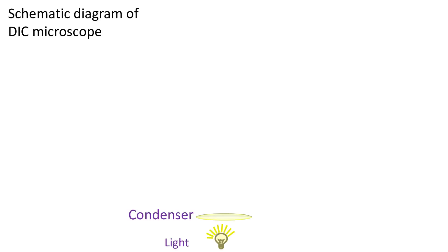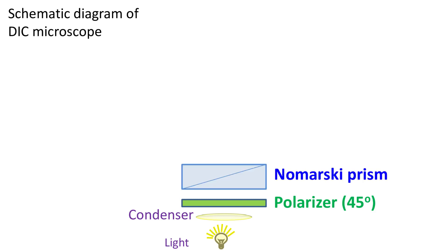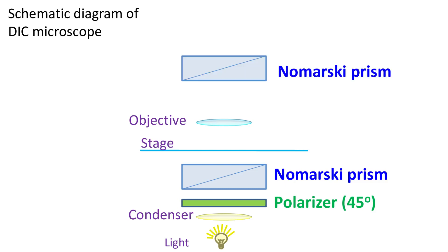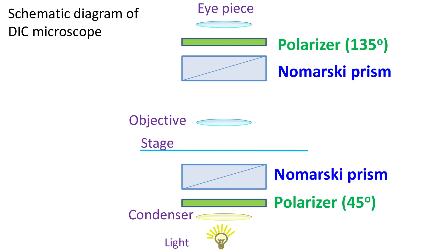Now let's see the schematic diagram of the DIC microscope. At the bottom we have the condenser, just like in a bright field microscope. Next we have the polarizer, placed at an angle of 45 degrees. On top of the polarizer we have the Nomarski prism, followed by the objective lens. On the top we have the second Nomarski prism, followed by the analyzer at an angle of 135 degrees. Finally at the top we have the eyepiece to see the specimen. The angles of the polarizer and analyzer can be changed as per the user's wish — here we use 45 and 135 degrees to keep things simple.